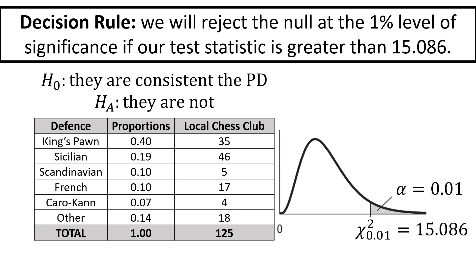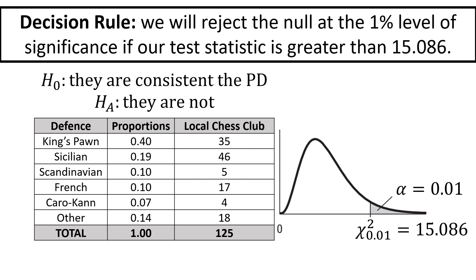For our decision rule, we're going to reject the null hypothesis at the 1% level of significance if our test statistic is bigger than the critical value of 15.086. When will that be the case? If the differences between the observations and the expectations tend to be large, then the null probably isn't true and we'll wind up with a chi-squared statistic much bigger than the critical value. But if expectations and observations are similar enough, the chi-squared statistic will be small. The chi-squared statistic is a measure of statistical difference.